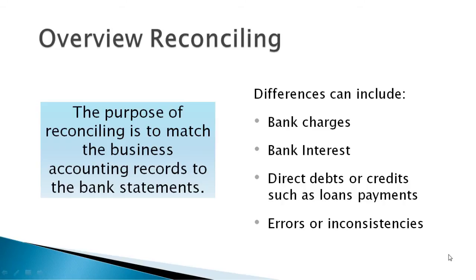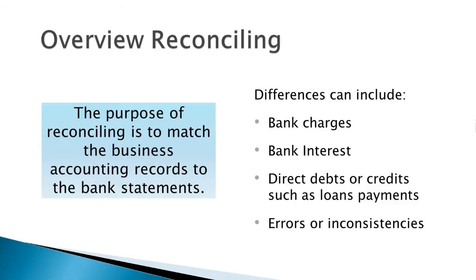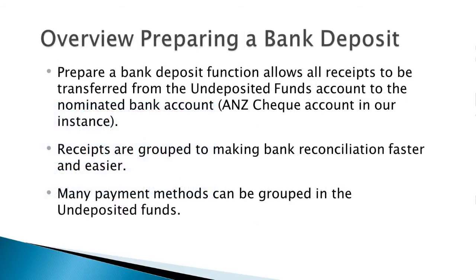One, using the bank statement received manually and two, using a downloadable bank statement from the internet which is more automated. When accounts are reconciled in the data file, transactions are ticked off as they appear on the bank statement against the account on the screen. The prepare a bank deposit function allows all receipts to be transferred from the undeposited funds account to the ANZ cheque account as one big total. When the business is doing their banking, this function is used to clear the undeposited funds account and deposit the funds into the ANZ cheque account within the MYAB Account Right. However, a person will still need to take the deposits to the bank physically for the funds to be actually banked.